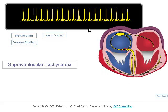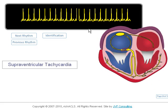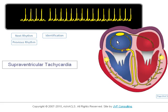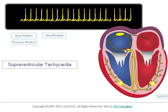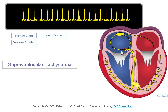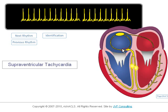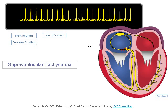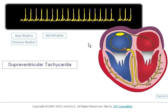When we look at the animation, we see the SA node is not acting as the primary pacemaker. There is a small accessory pathway which has an impulse rapidly traveling around and around. Every time the impulse travels through the AV node, it is transmitted down through the Purkinje fibers into the ventricles.